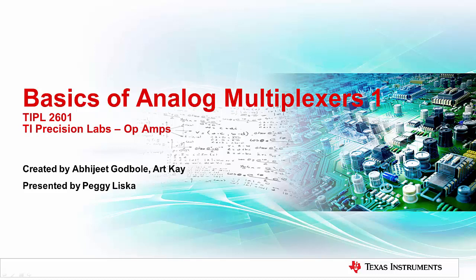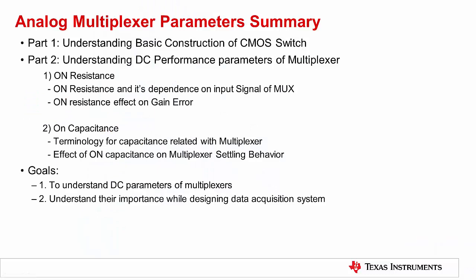Hello, and welcome to the TI Precision Lab series on basics of analog multiplexers. This video will provide an overview of the DC performance parameters of multiplexers. The goal of this series is to understand the DC performance parameters of multiplexers and how they affect data acquisition system performance. This video series explains how the parameters listed in an analog multiplexer's data sheet can be used to understand system performance limitations and error sources.